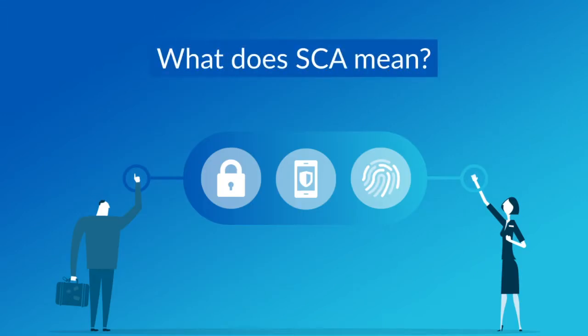And what does SCA mean? To be compliant, guests need two of the below authentication factors to approve almost all online payments: something the customer knows, like a password or a PIN; something the customer has, like a phone or hardware token; or something the customer is, like a fingerprint or face recognition.